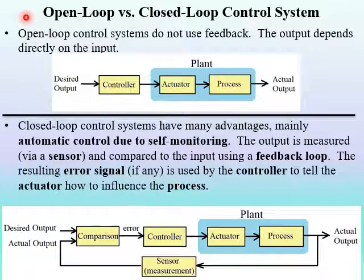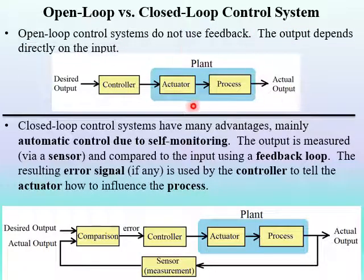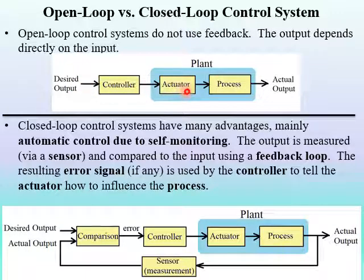Let's look at open-loop versus closed-loop control systems. The disk speed control example is an open-loop control system because it doesn't use feedback. The output depends directly on the input — the set point goes into the controller, which sends a signal to the actuator, and the actuator works on the process to produce an output.